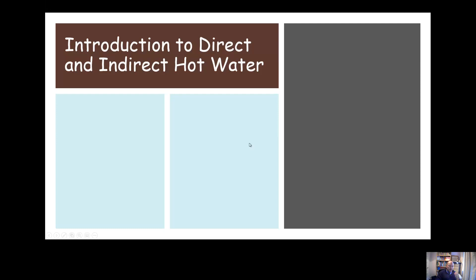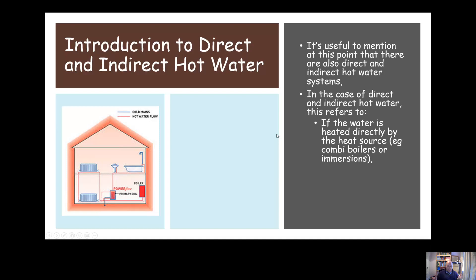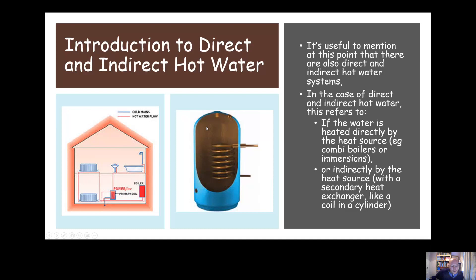It's a good time to introduce direct and indirect hot water, because they are slightly different. For hot water systems, direct and indirect refers to how the water is heated. In a direct hot water system, the water is heated directly by the heat source — for example, a combi boiler heats the water and it comes out of our taps, or an immersion heater sitting in the cylinder directly heats the water which then comes out of our taps.